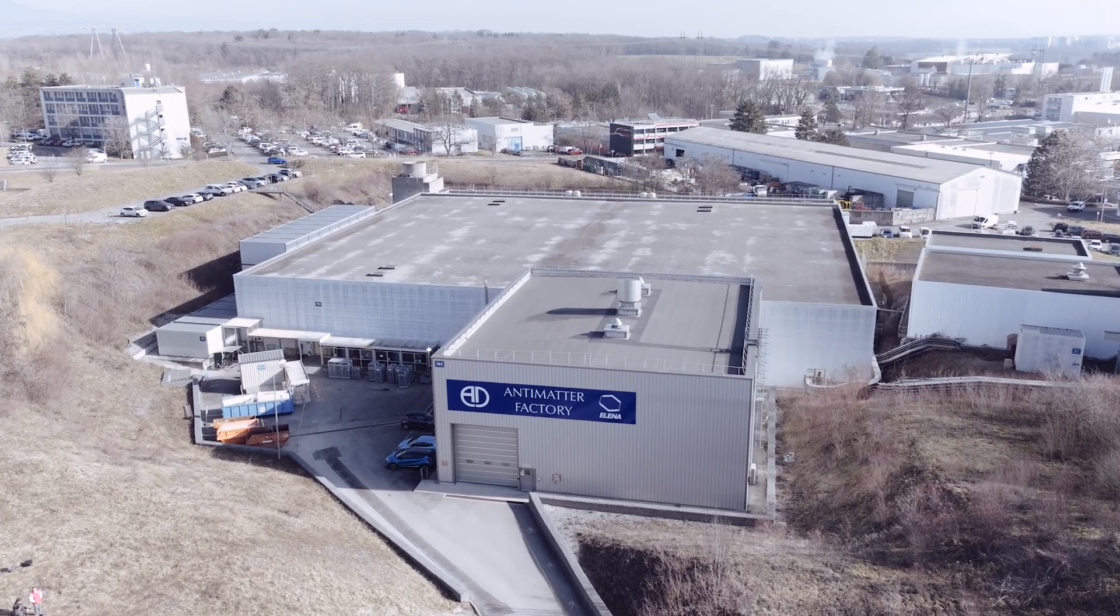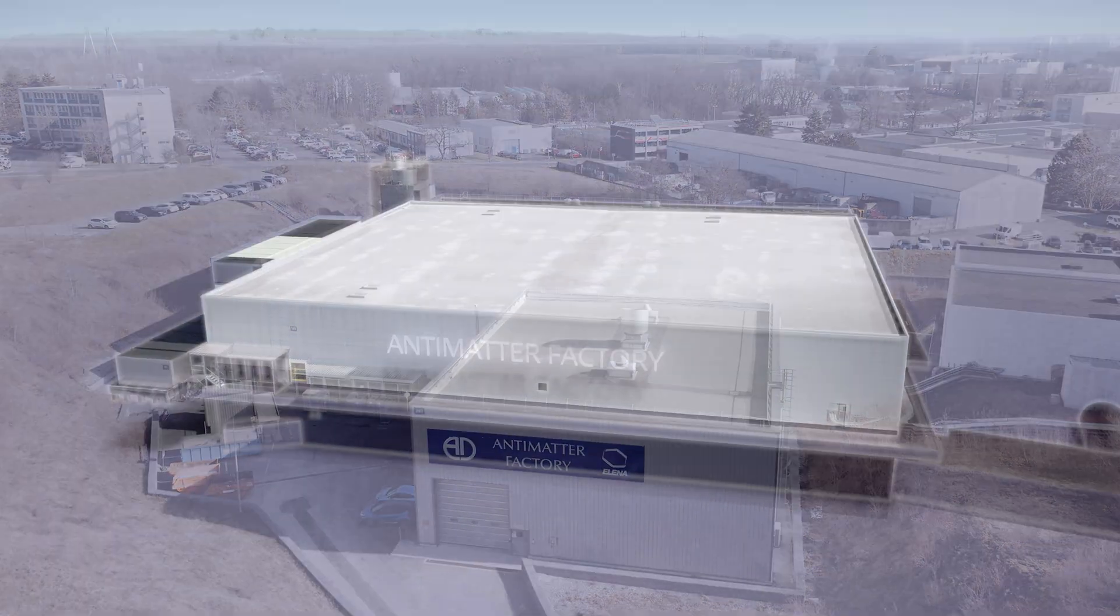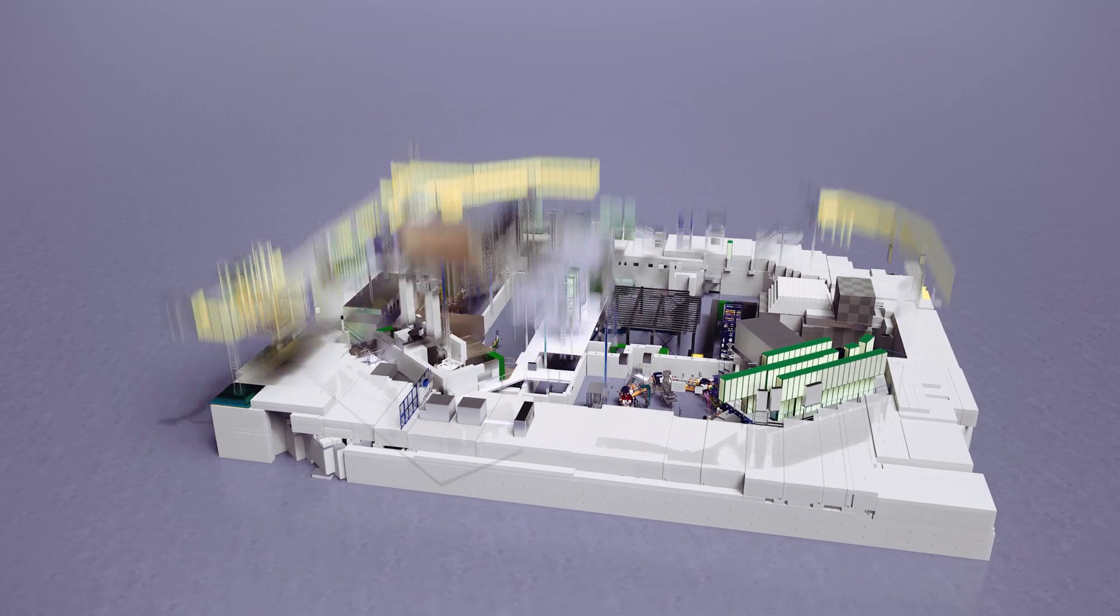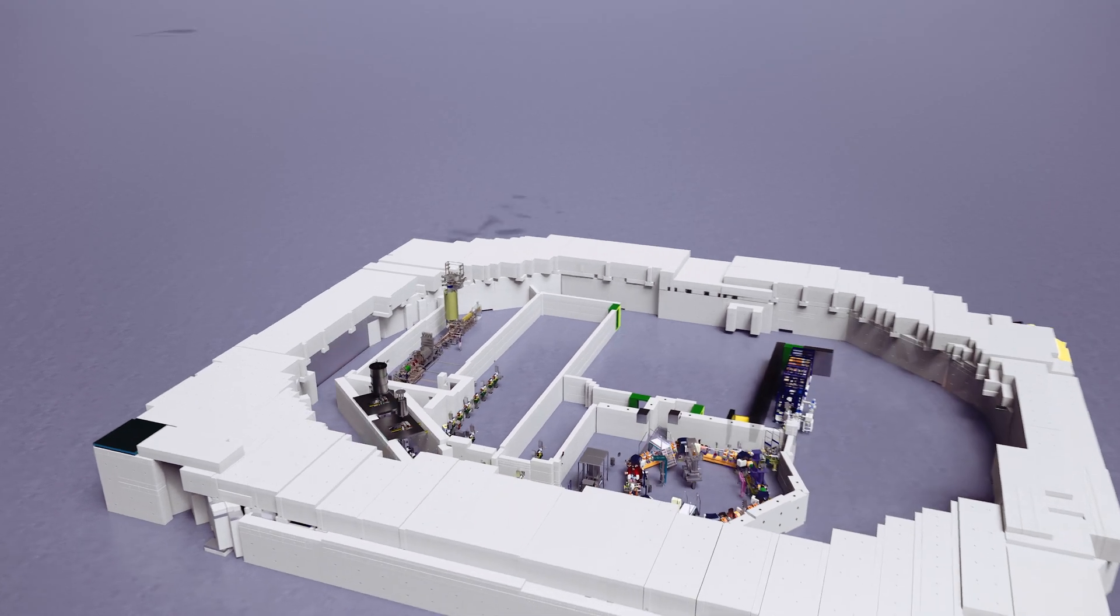We're starting here with a drone's eye view of what we call the antimatter factory here at CERN, the antiproton decelerator and the ELENA rings that provide antiprotons to low-energy antimatter experiments.